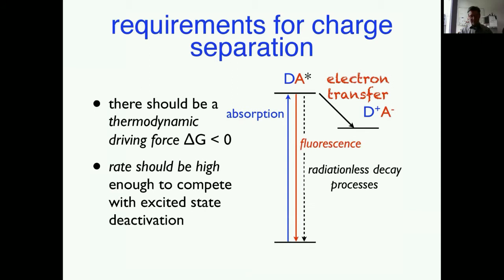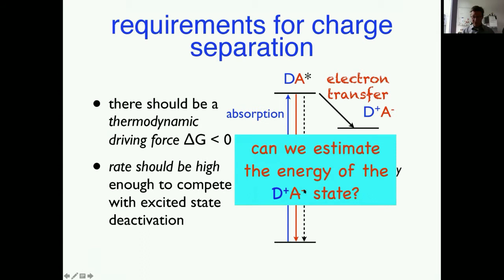Marcus got the Nobel Prize for this theory. The first thing is that there should be a driving force — the process should be thermodynamically favorable. Furthermore, if you want to induce this process, the black arrow has to be faster than the red arrow, so it has to compete with the intrinsic decay. Those are two simple requirements.